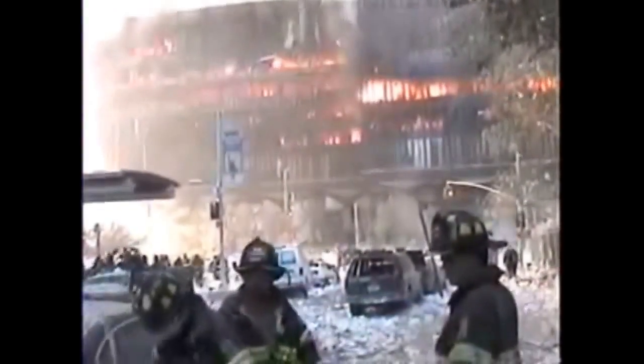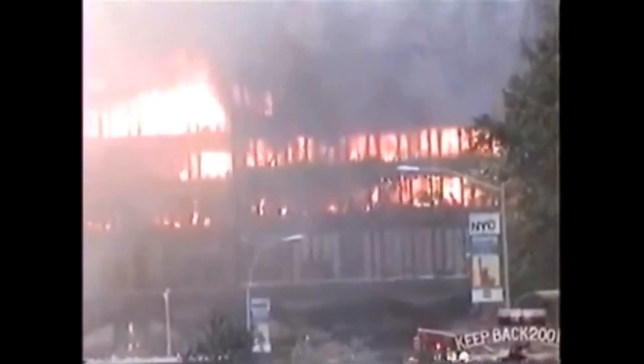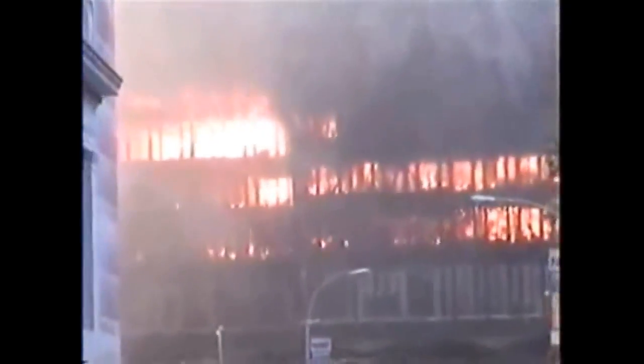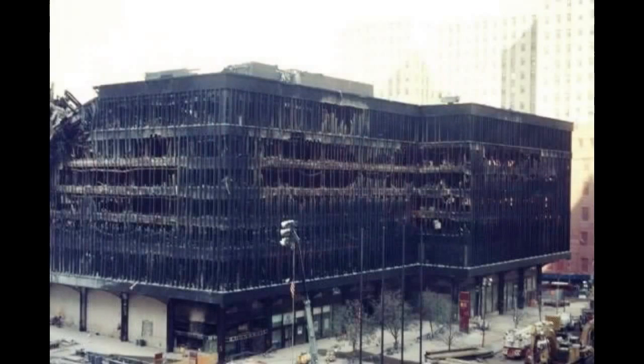World Trade Centre 7 was not a towering inferno, although it did have some fires. This on the other hand is Building 5. It was a much smaller building than Building 7, but it was well alight across most of its floors. Wouldn't it be reasonable to assume that the steel in this building would be undergoing similar stresses to that of World Trade Centre 7?